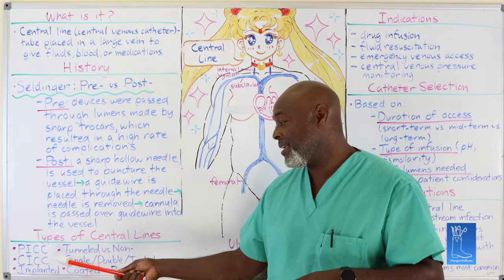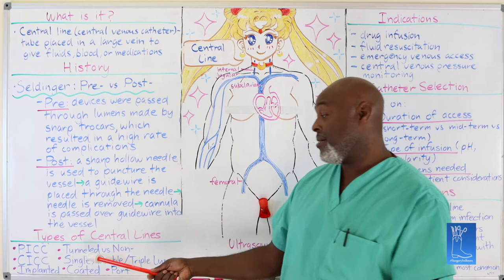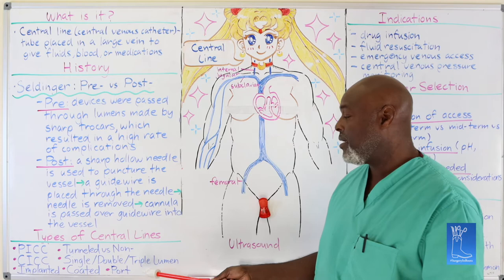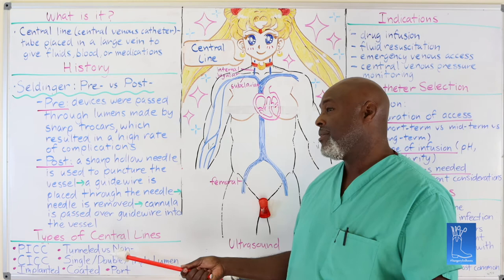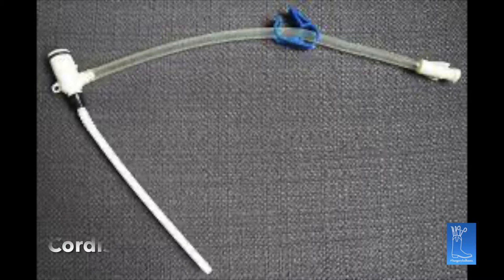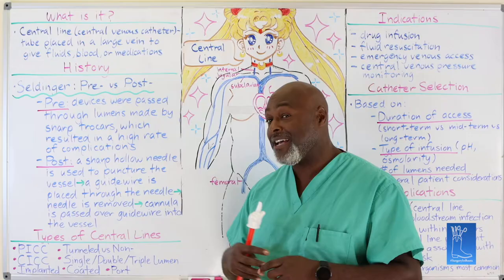These centrally inserted lines — PICC lines, tunneled versus non-tunneled — come in single, double, or triple lumen. One thing not listed is something called a cortis, which is kind of a double lumen but with a large bore so you can push a lot of fluids. We typically use them for PA catheters because you have to put another catheter through it.